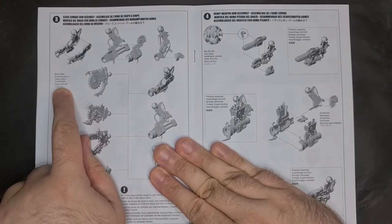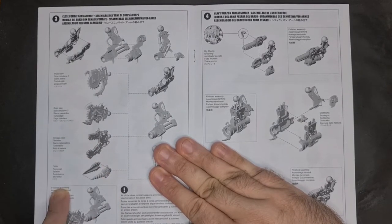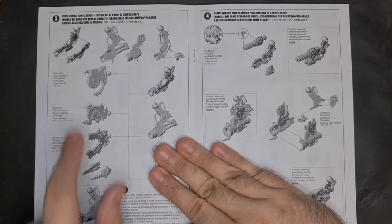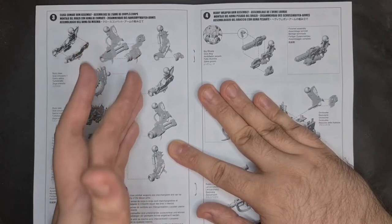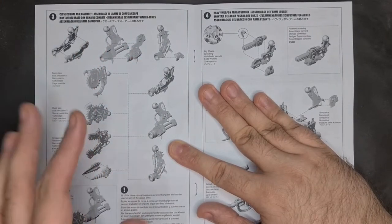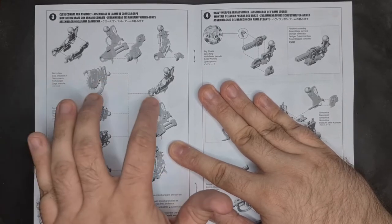So you get some options here: buzz claw, buzz saw, chopper, claw, or driller. The arms are quite simple. You put these two pieces together, you've got a ball joint here. Once you build your arm, you've got all these slightly different designs, which is nice.